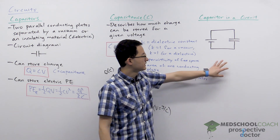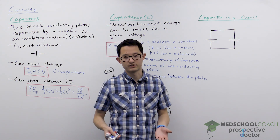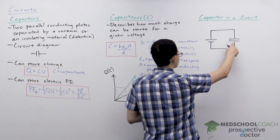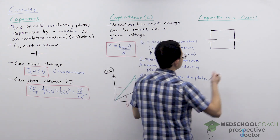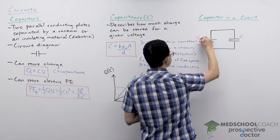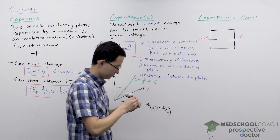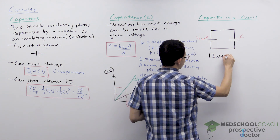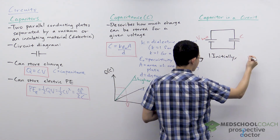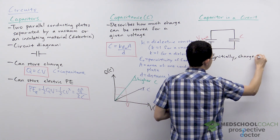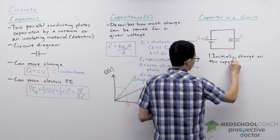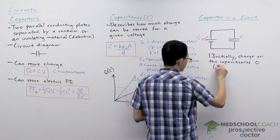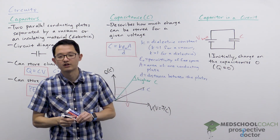Now let's talk about how capacitors work in a circuit and how they are able to store charge. Here we have a capacitor connected to a battery, so the capacitor has some capacitance C and the battery is supplying some voltage. Initially, the charge on the capacitor is zero — Q equals zero — because unlike batteries, which have a built-in voltage from electromotive force, capacitors initially have no charges on the plates; they're neutral.